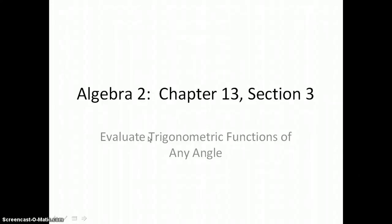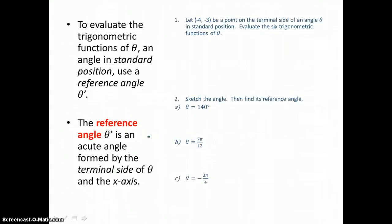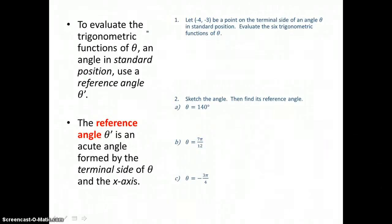In section 13.3, you will evaluate trigonometric functions of any angle. In our first example, we're going to let negative 4, negative 3 be a point on the terminal side of an angle theta in standard position. We'll evaluate the six trigonometric functions of theta.